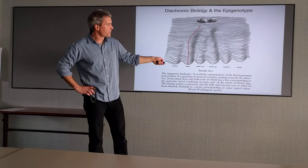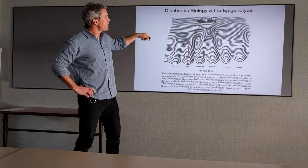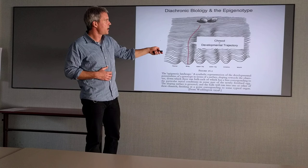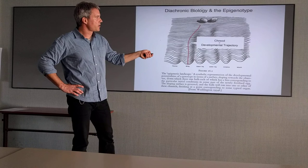Waddington called this diachronic biology because it makes explicit the notion that what we're trying to understand - this map is a process. How do you get from here to here? And he called this process a chreod. This is a word that's not used very often anymore nowadays. I would call it a developmental trajectory. So we're trying to find an explanation of the shape of this trajectory.